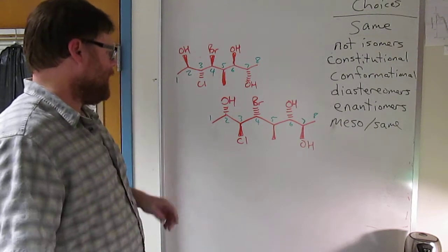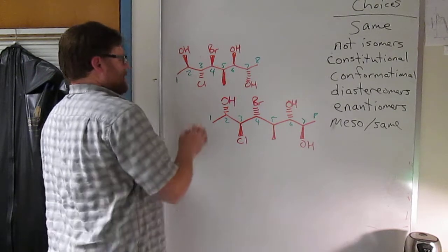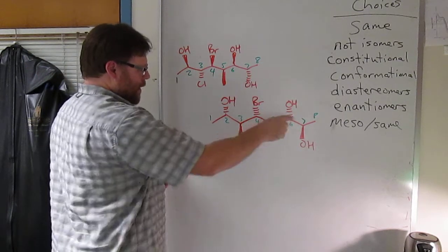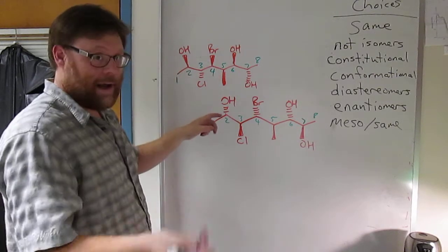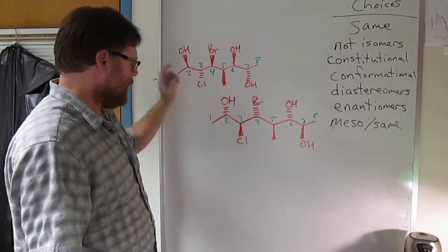Okay, if you're back, again if you overlap the carbon skeletons, so carbons one through eight line up exactly the same, then this OH being out is the opposite absolute configuration of this OH being back.